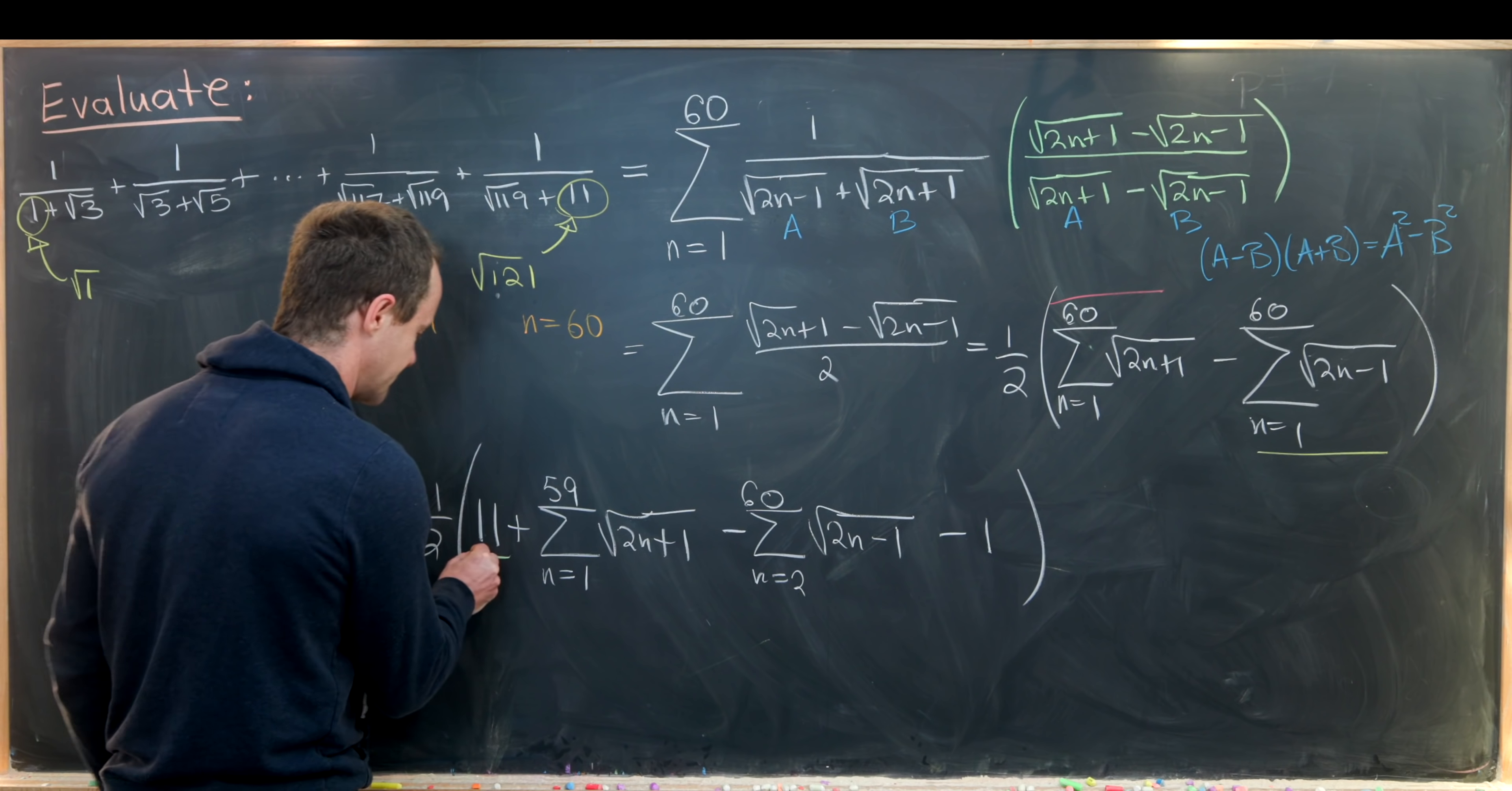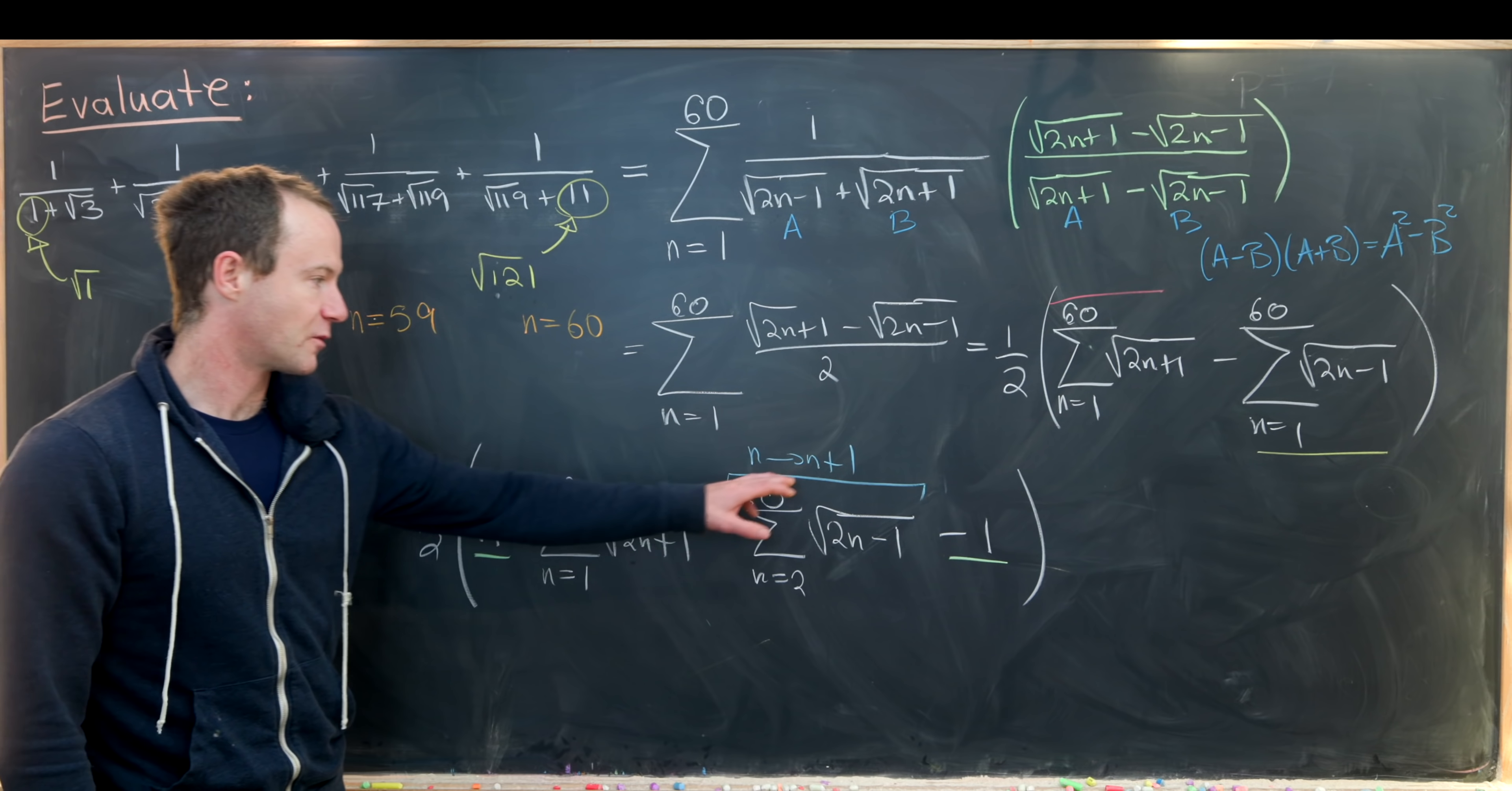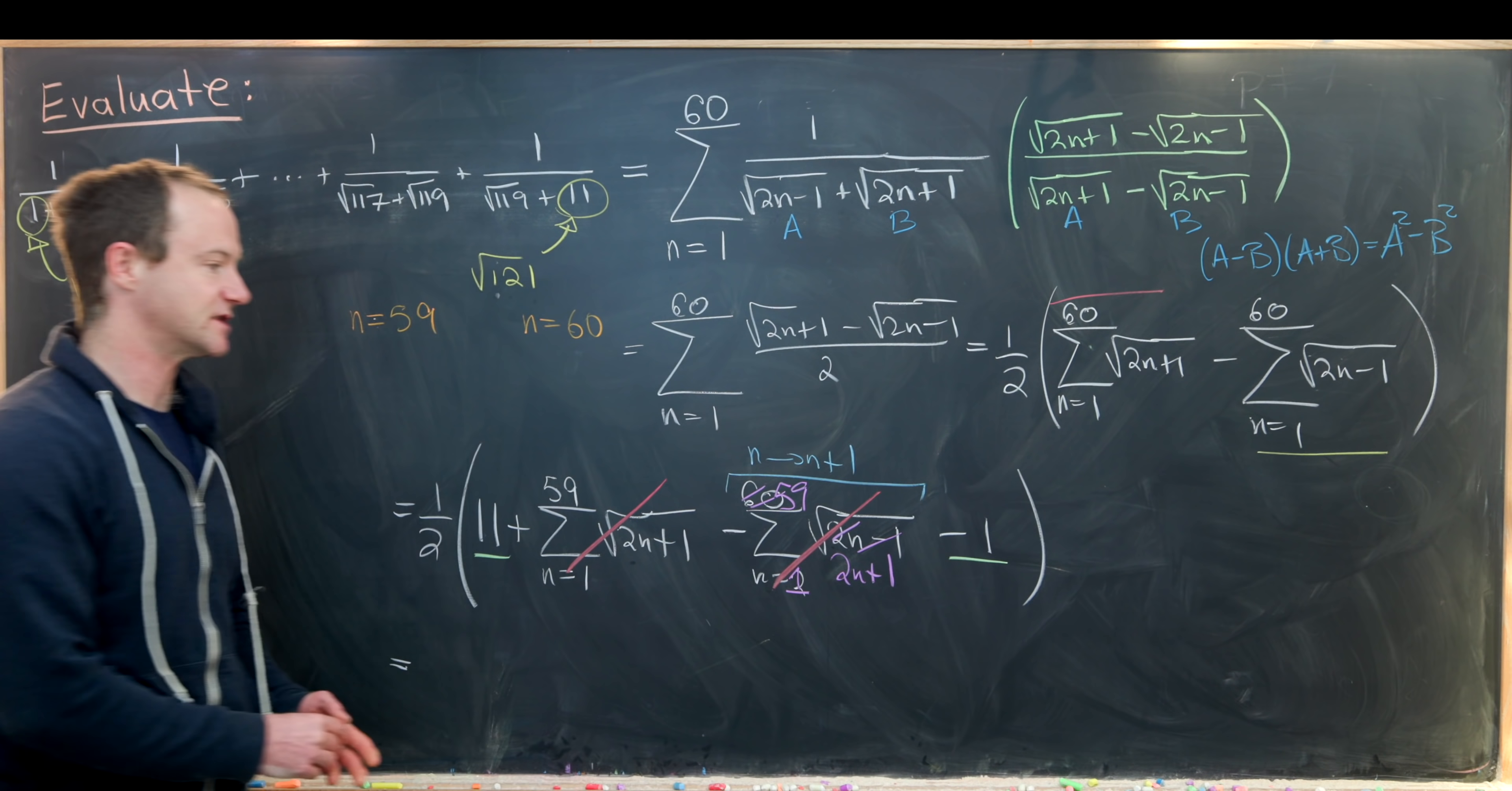Next up we can combine these two numbers 11 and negative 1, and that'll give us 10. Then we can re-index this guy by sending n to n plus 1, replacing all of the n's with n plus 1's. But that's going to change this 2n minus 1 to 2n plus 1, and when n plus 1 is 2, n is equal to 1, and when n plus 1 is 60, n is equal to 59. But now that's exactly what we have for this first sum so that makes those two cancel.